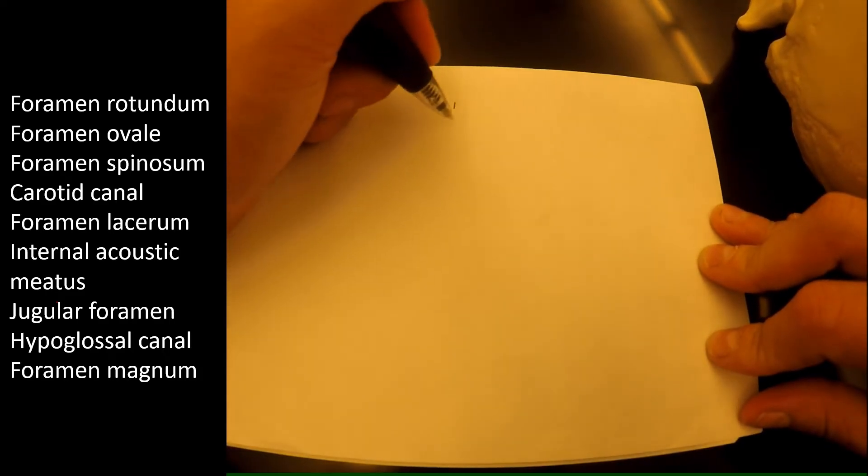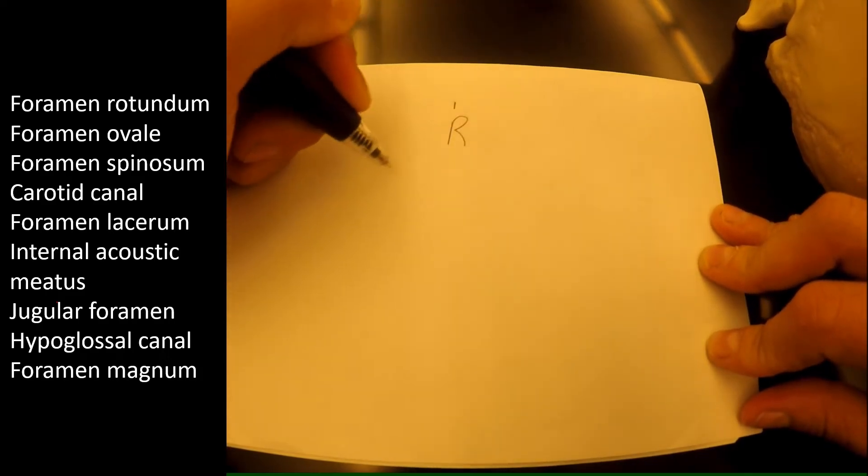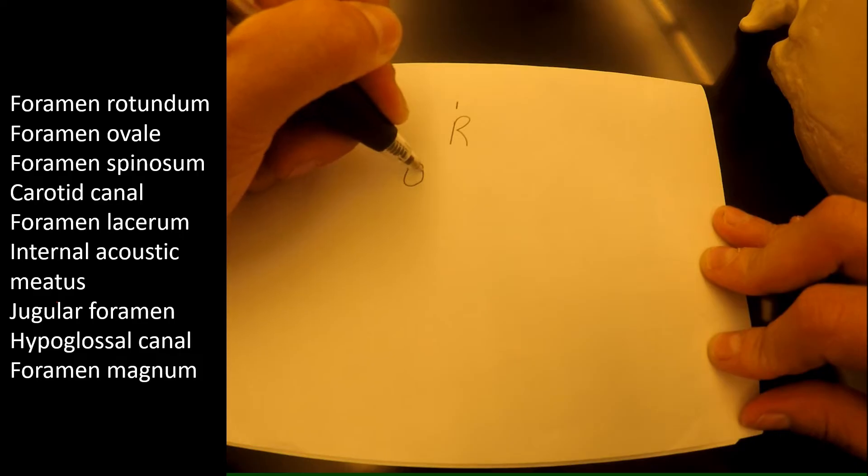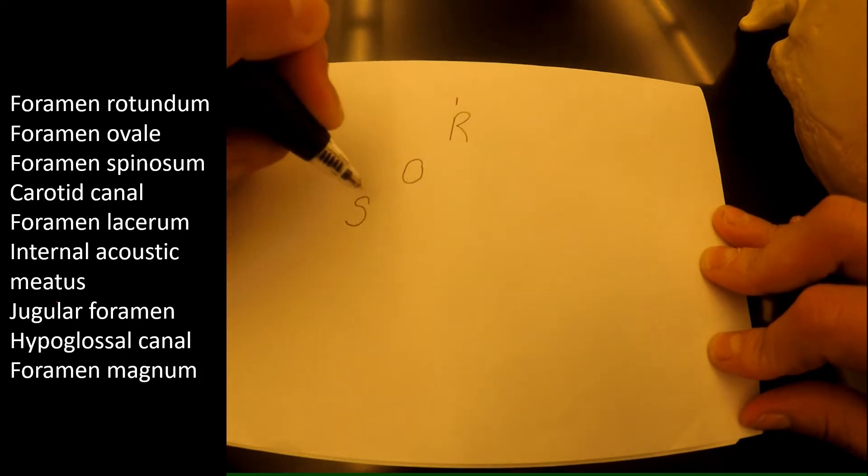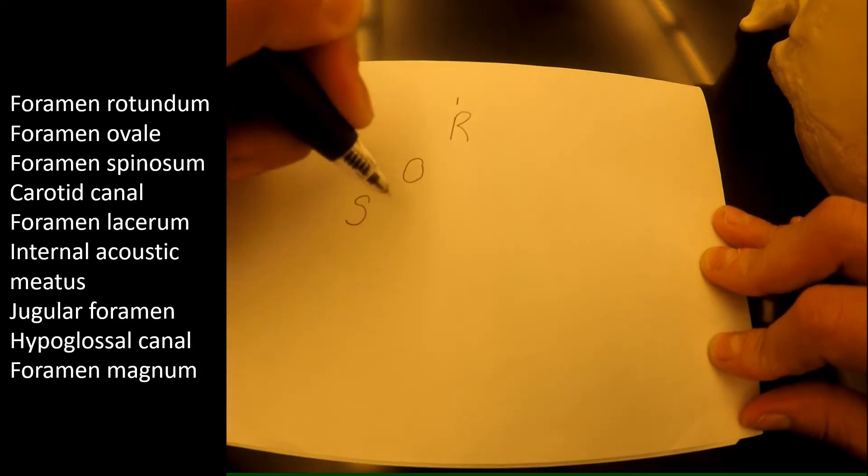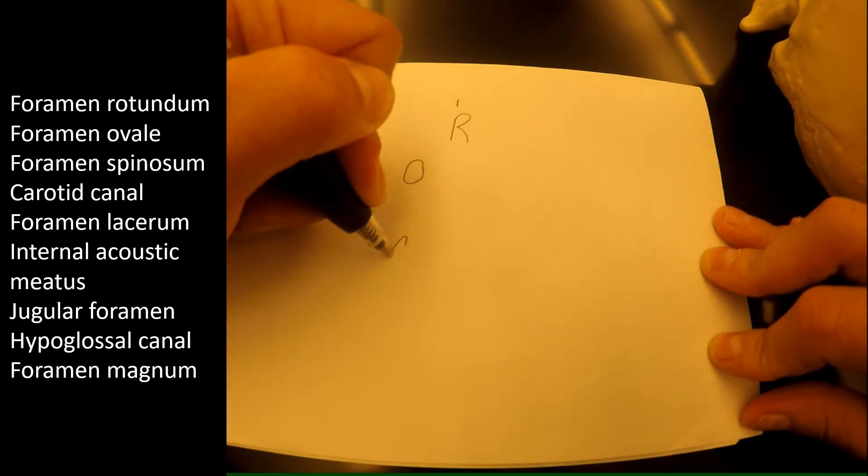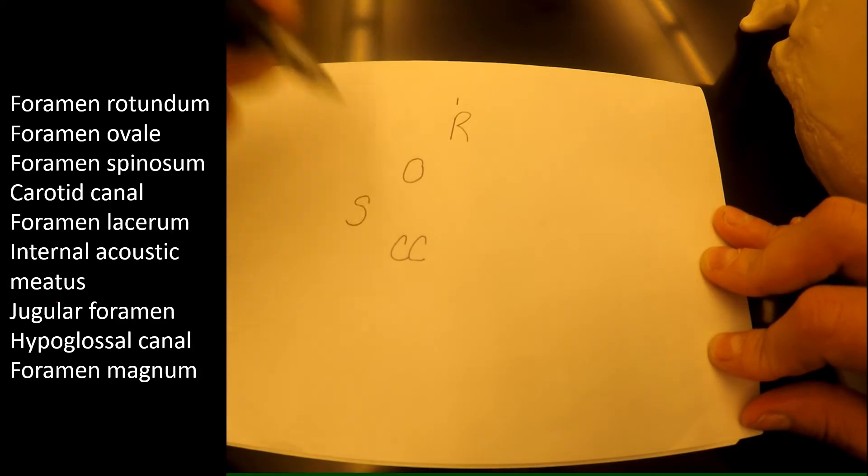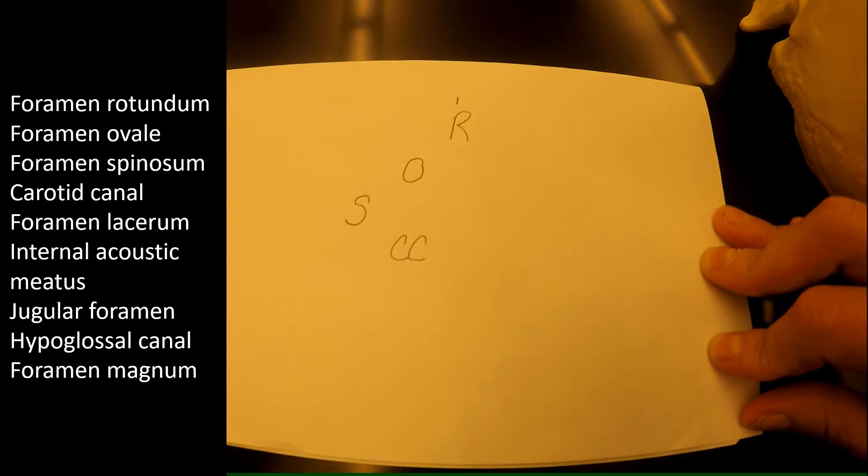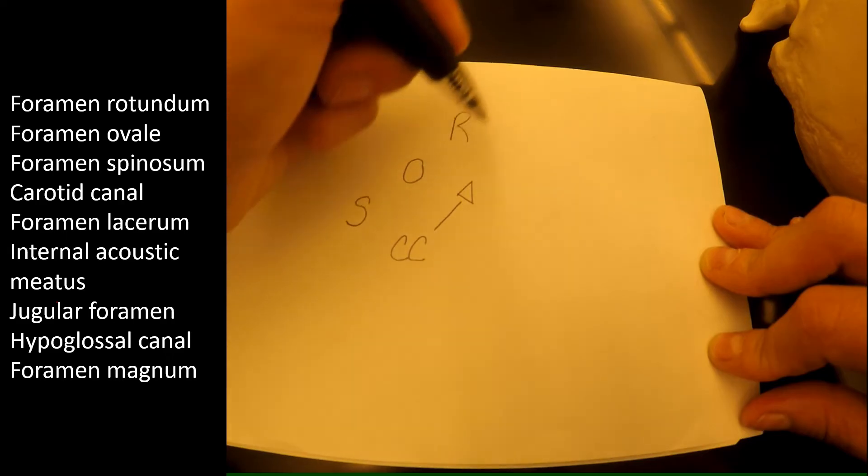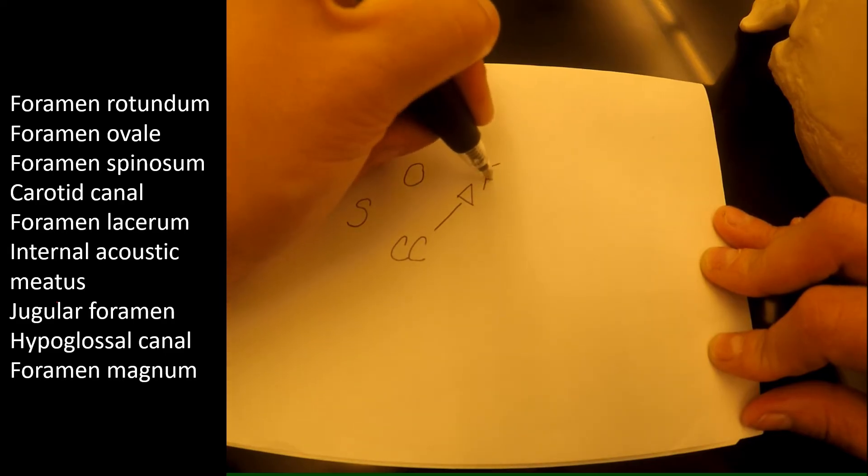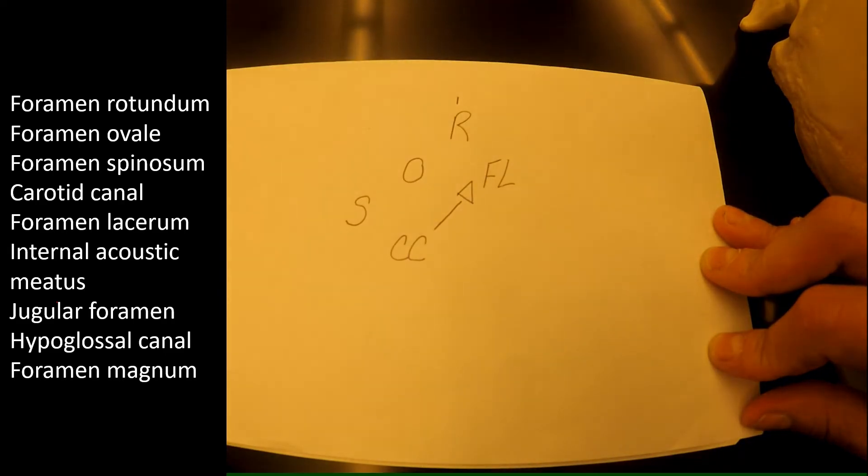Drawn as a picture, you just have to remember you do your R, O, S all in a line. Then you drop back from your S and you have your CC, which is your carotid canal. You go straight up through the channel to your foramen lacerum.